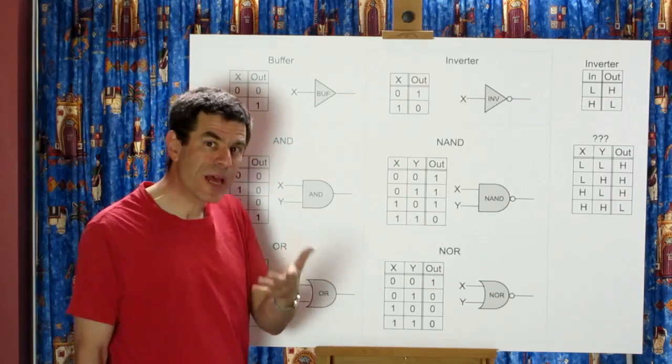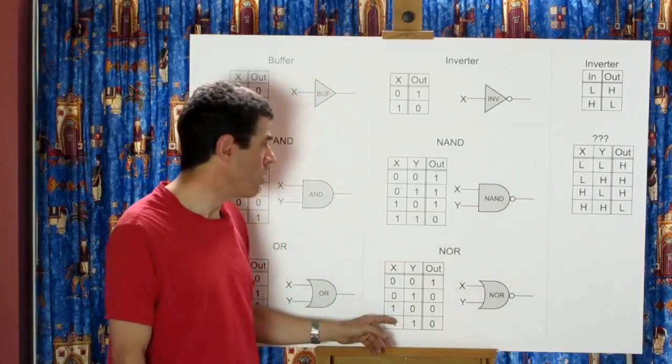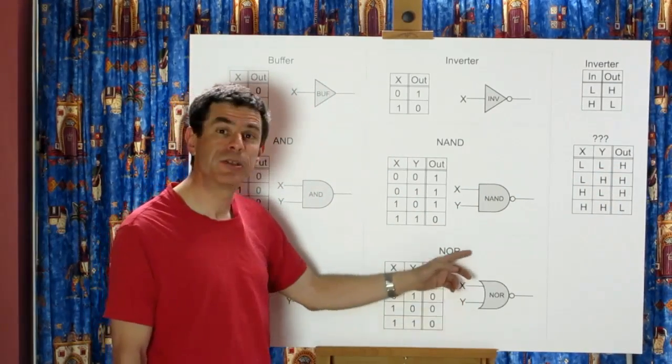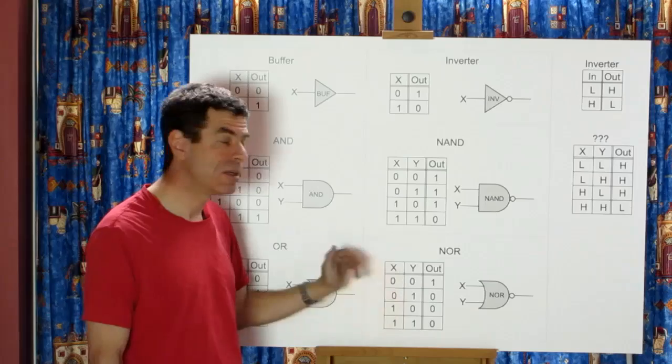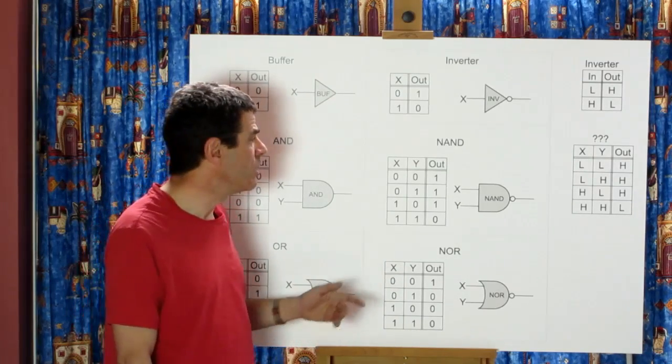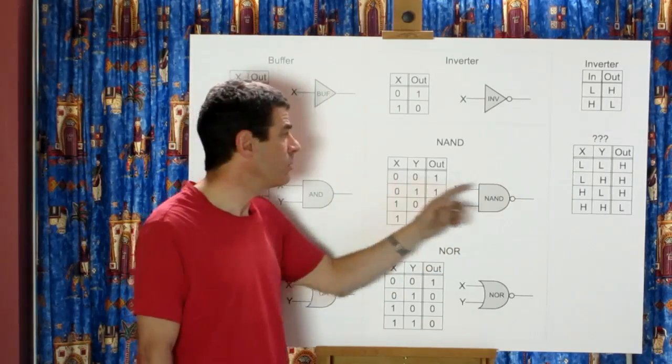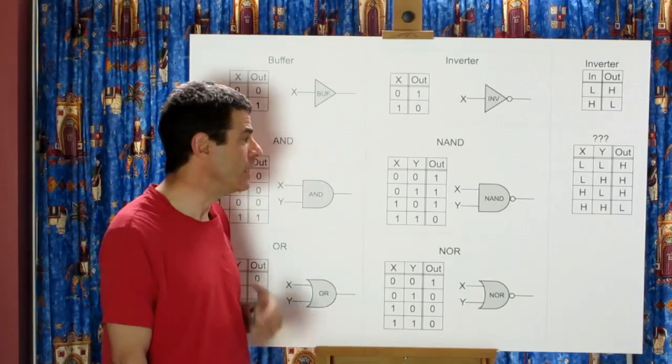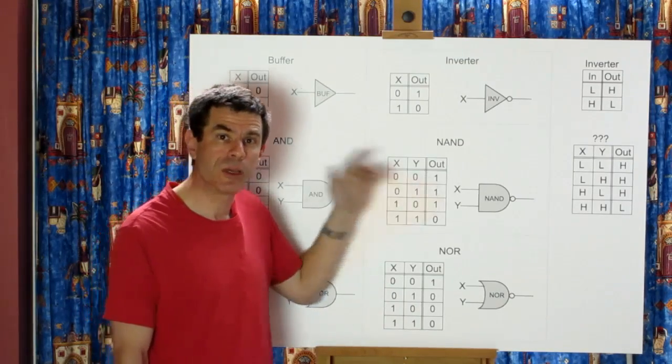It would be equally valid to translate low to 1 and high to 0 and that would produce the NOR function. If you shuffle lines around a little bit you'll get there. But most people, myself included, find the translation from low to 0 and high to 1 to be the more intuitive one and easier to use. So that's the convention we're going to be using.